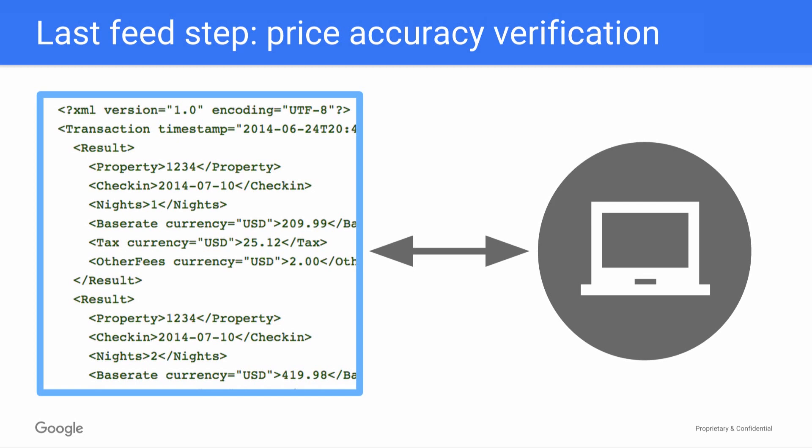Once you've submitted your feeds, you'll go through a price accuracy verification process, where we ensure that the data you're submitting is accurate and able to be re-pulled regularly. To do this, we crawl your booking pages and compare the prices found there to the prices you're submitting in your feeds. Once we verify that the accuracy meets our thresholds, you'll be eligible to start appearing in hotel listings.